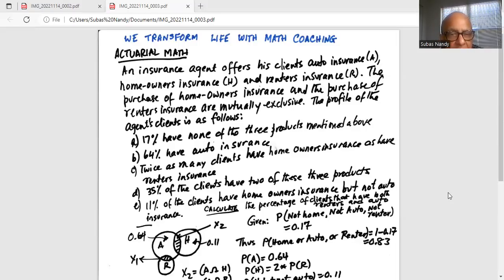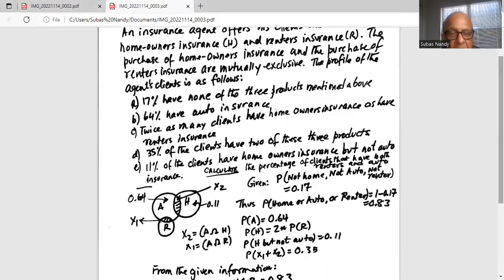Now, it is also given probability of auto is 0.64 and probability of home insurance is two times probability of renter's insurance. Let X2 be the portion where auto and homeowners meet, the intersection of homeowners and auto. And let X1 be the intersection of auto and renter.